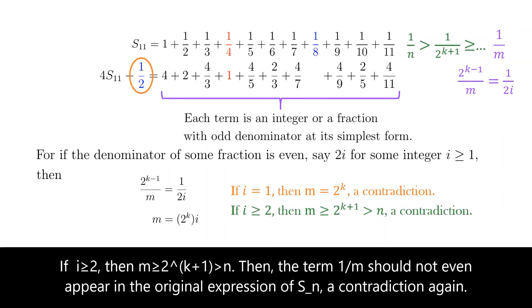If i is at least 2, then m is at least 2 to the power of k plus 1, which is strictly larger than n. Then the term 1 over m should not even appear in the original expression of S_n, a contradiction again.